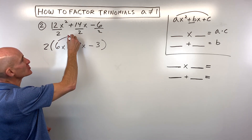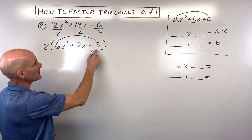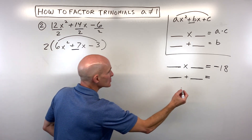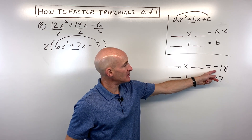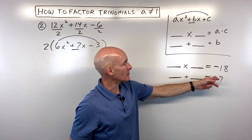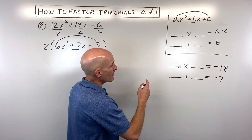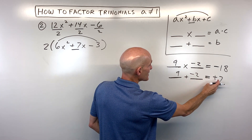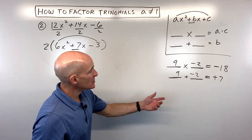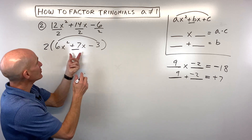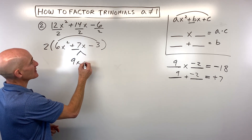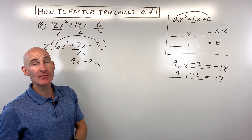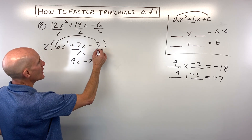We need two numbers that multiply to 6 times negative 3, which is negative 18, but also add to the middle coefficient, positive 7. Going through combinations — 1 and negative 18, negative 1 and positive 18, 3 and negative 6 — it turns out to be positive 9 and negative 2, because 9 plus negative 2 is 7 and 9 times negative 2 is negative 18. You might wonder if the order matters — it doesn't; you'll get the same answer either way.